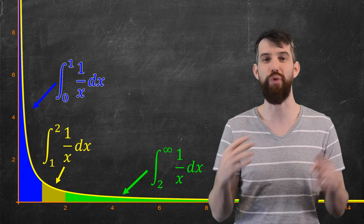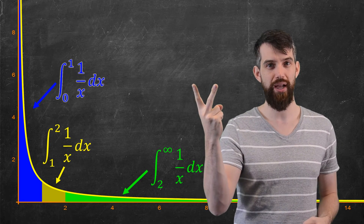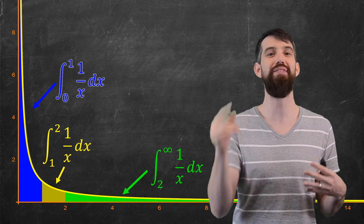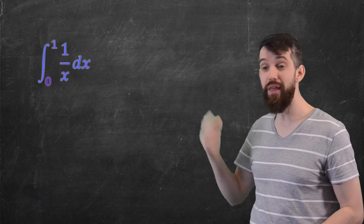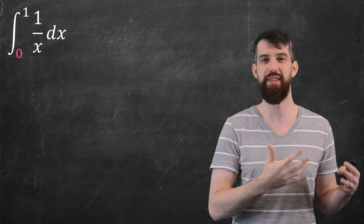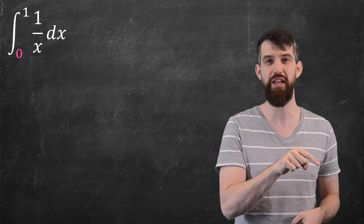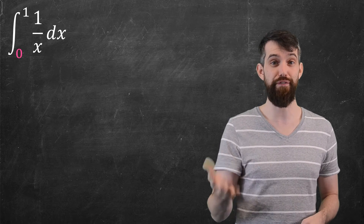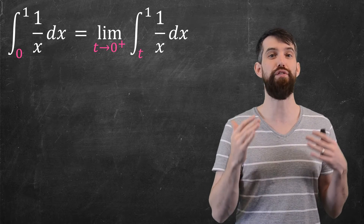That handles the green region going off to infinity — Case 1. Now for Case 2: the integral from 0 to 1 where we have a discontinuity, a vertical asymptote at 0. We use the same trick: replace 0 with t, but now the limit is as t goes to 0 from the right. So instead of integrating from 0 to 1, we integrate from t to 1 and take the limit as t approaches 0 from the right.